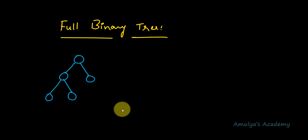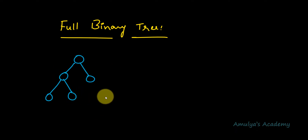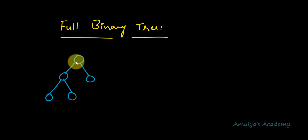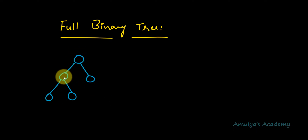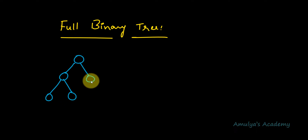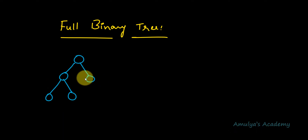Let's see some examples. This is a binary tree because every node has 0 or 2 children, and it is also a full binary tree. The root node contains 2 children — a left child and a right child. This node also contains 2 children, and the leaf nodes contain 0 child nodes. So this is a full binary tree.